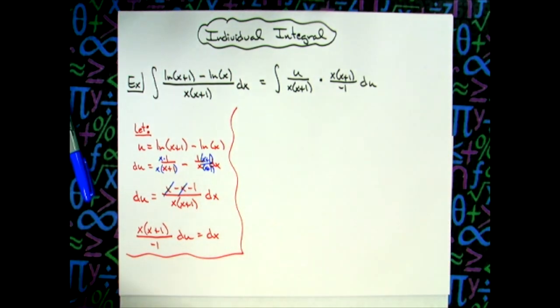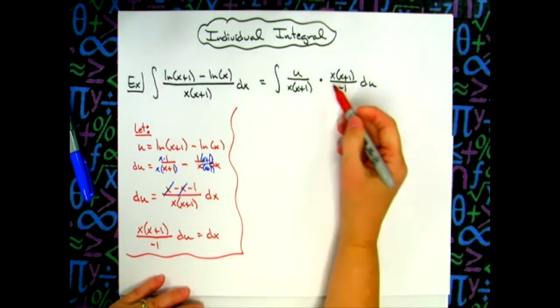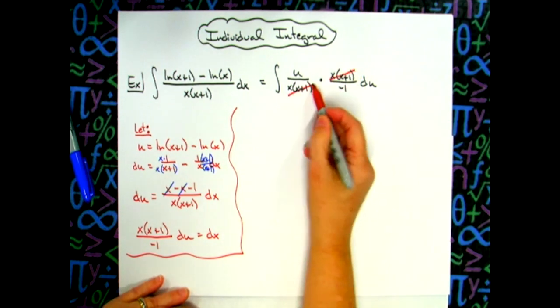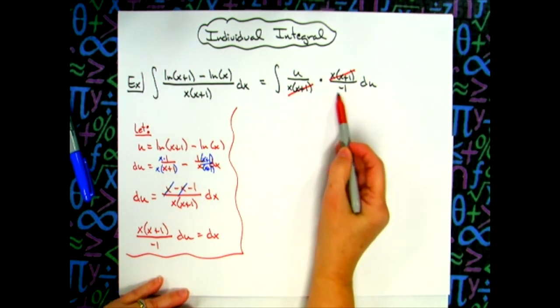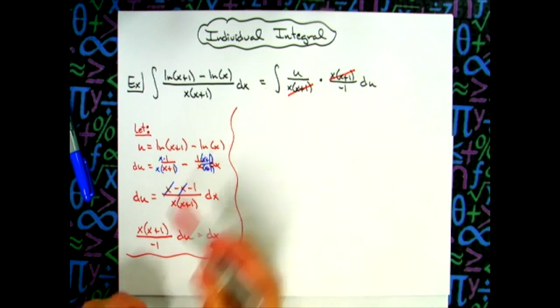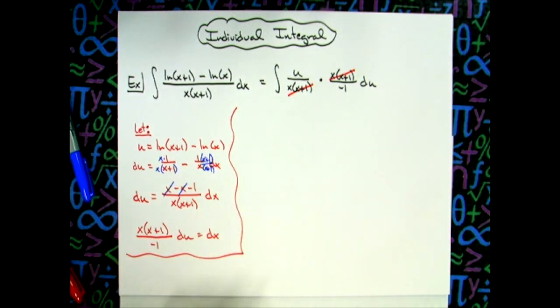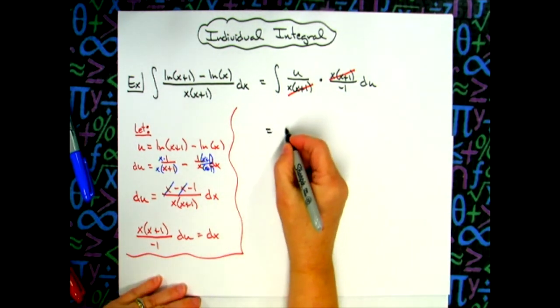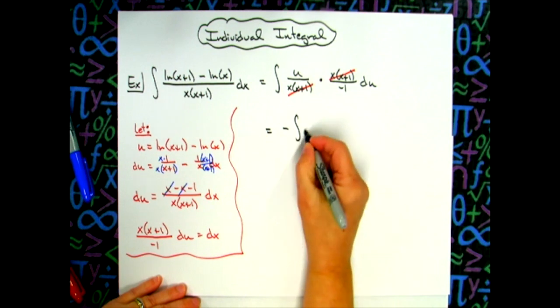I left it in that form so that we could easily see that the numerator and denominator is going to cross out. I've got a negative 1 here that we're going to pull out in front of that integral. So basically, at this point, we're going to have a negative, the integral of u du.